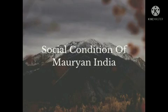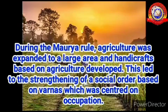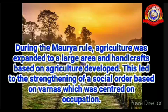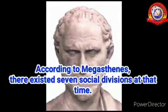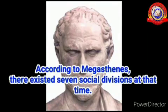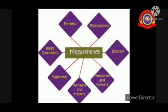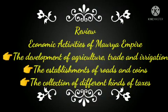Next, let us discuss the social life of the Maurya Empire. During Maurya rule, agriculture was expanded to a large area and handicrafts based on agriculture developed. This led to the strengthening of a social order based on the varna system, which was centered on occupation. According to Megasthenes, there existed seven social divisions at that time: kings, counselors, magistrates, artisans and traders, soldiers, philosophers, and farmers.